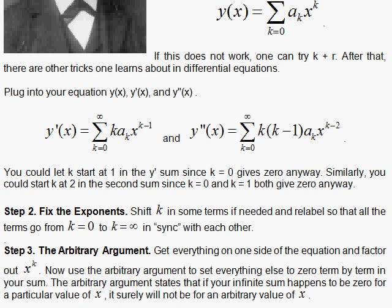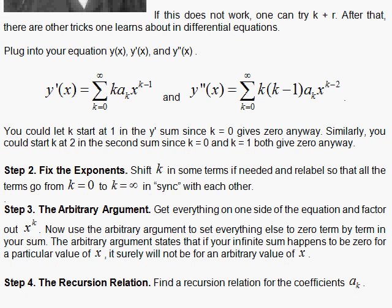And when you do that, you go to step 4, which is find the recursion relation, which will give you a k plus 1 term or a k plus 2 term in terms of the k term. We're going to do this in another section, but this is the general outline of the method of Frobenius.